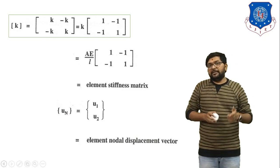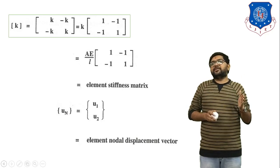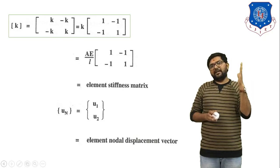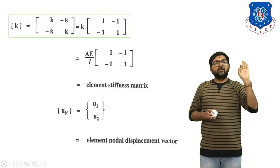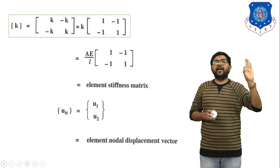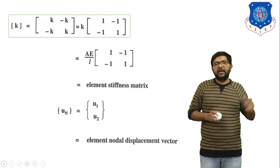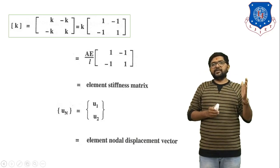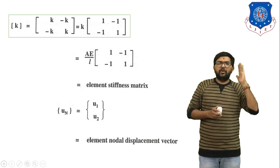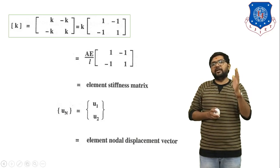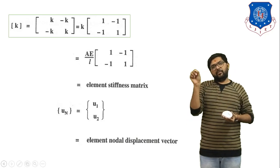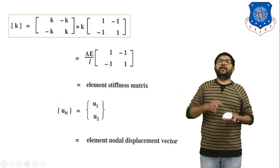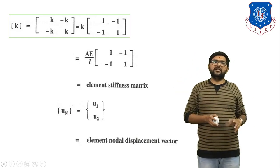An important rule: the displacement of a fixed node is always zero. For example, in a cantilever beam one end is fixed, so the displacement at the fixed point is zero. For all examples, displacement at a fixed node must be taken as zero. At the free end, if a force is applied, the beam deflects and we must find the deflection along both the x-axis and y-axis.